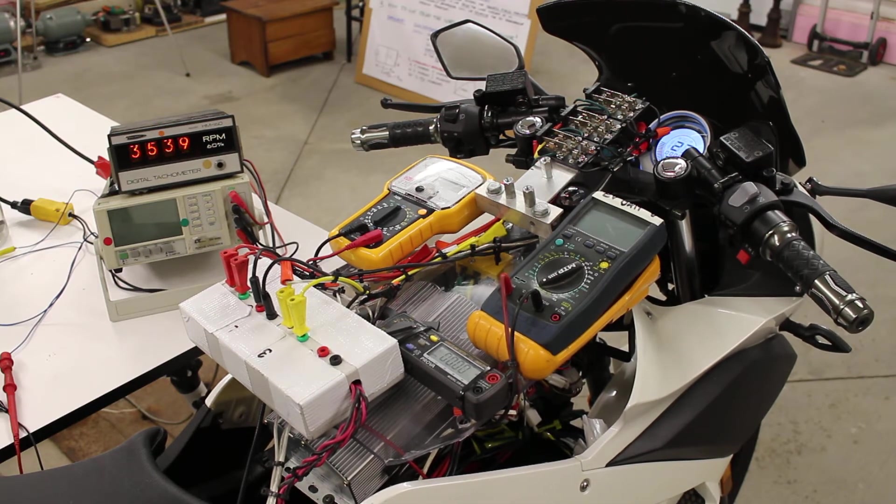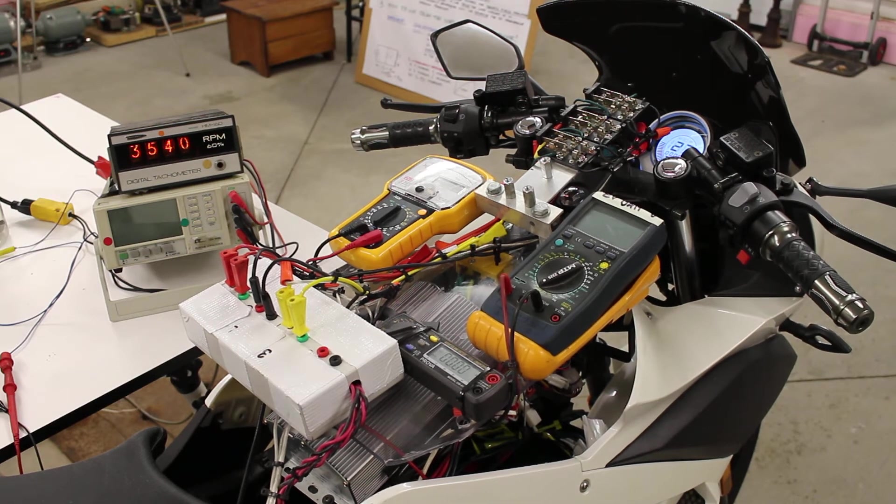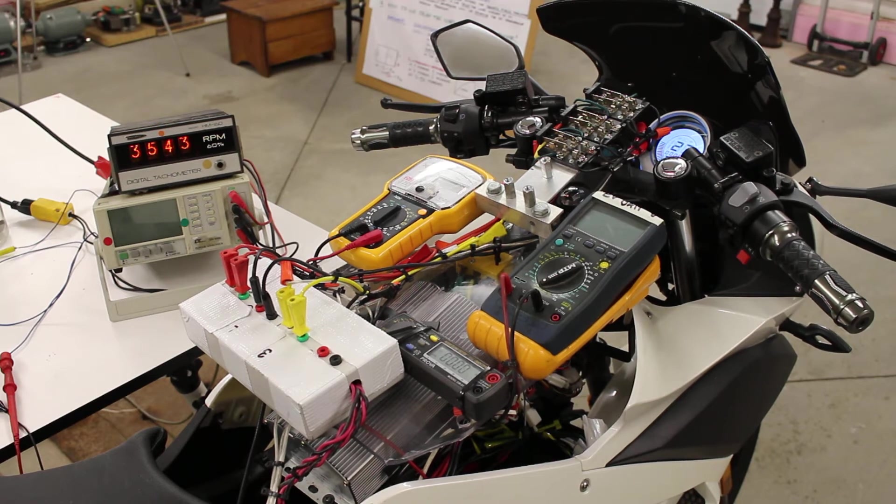Our EV is traveling at 27 kilometers an hour right now. The RPM of the RegenX motor is 3,542 RPM. And now I'm going to engage the RegenX coils.